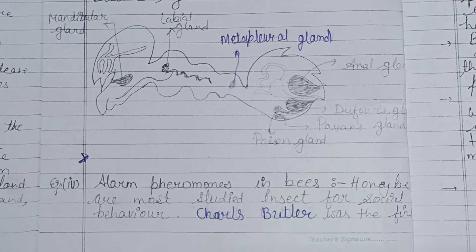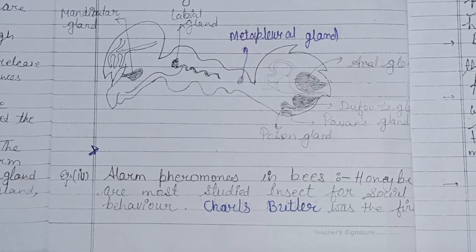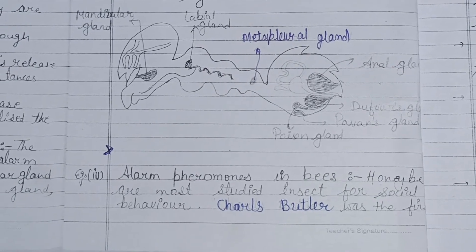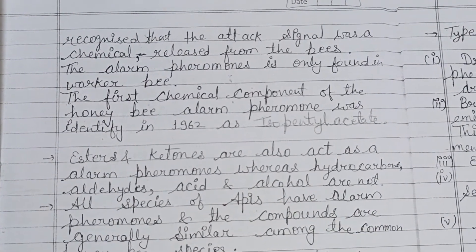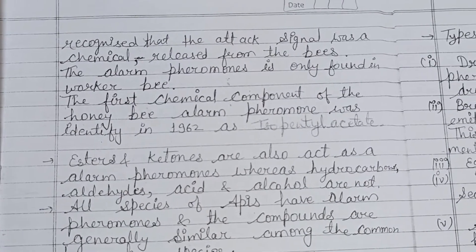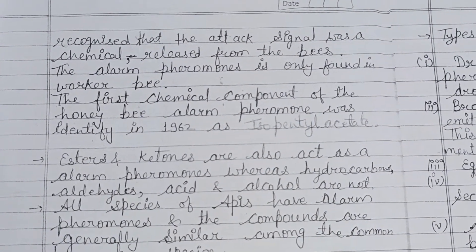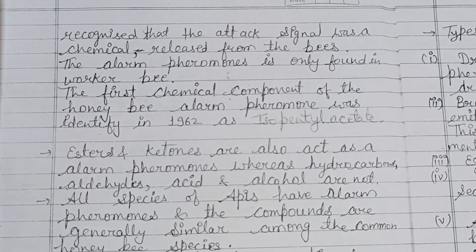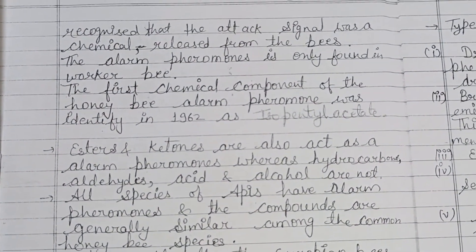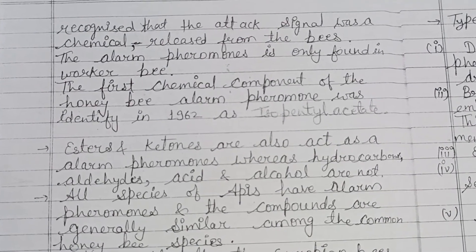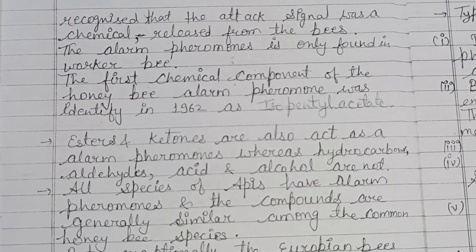Honey bees are the most studied insect for social behavior. Charles Butler was the first who recognized that the attack signal was a chemical released by the bees — specifically the worker bees. Alarm pheromone is only found in worker bees.